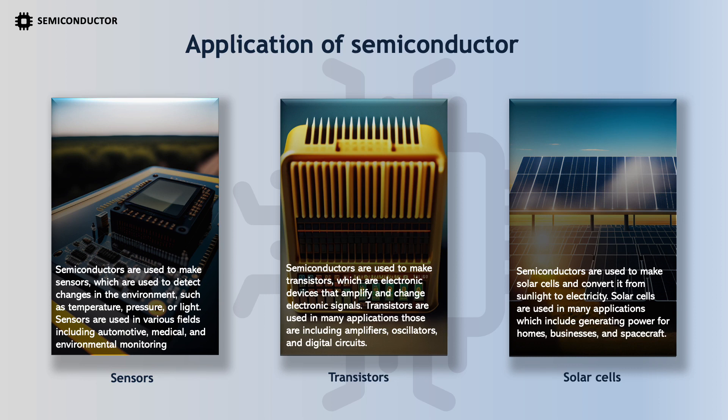Semiconductors are used to make transistors, which are electronic devices that amplify and switch electronic signals. Transistors are used in many applications including amplifiers, oscillators, and digital circuits. Semiconductors are also used to make solar cells that convert sunlight to electricity, which are used for generating power for homes, businesses, and spacecraft.